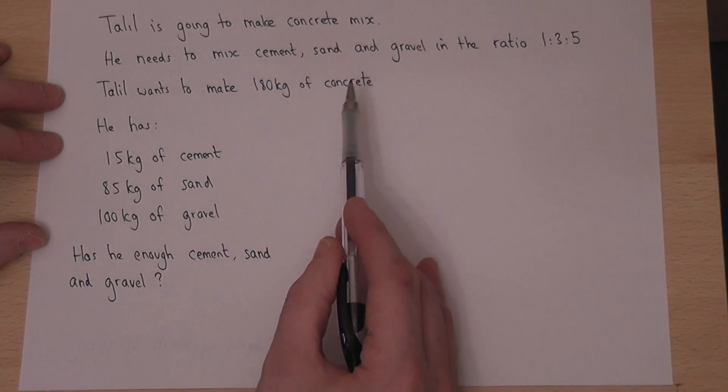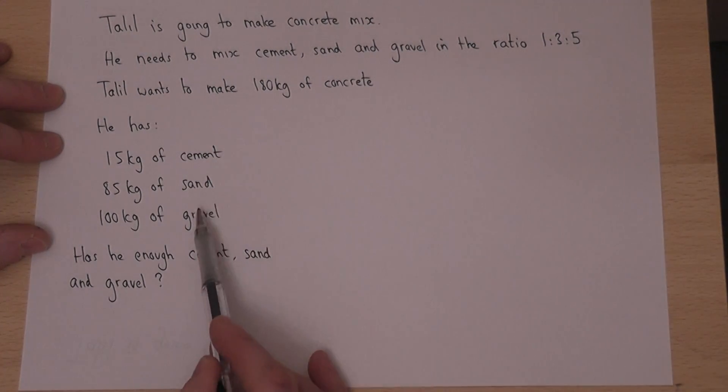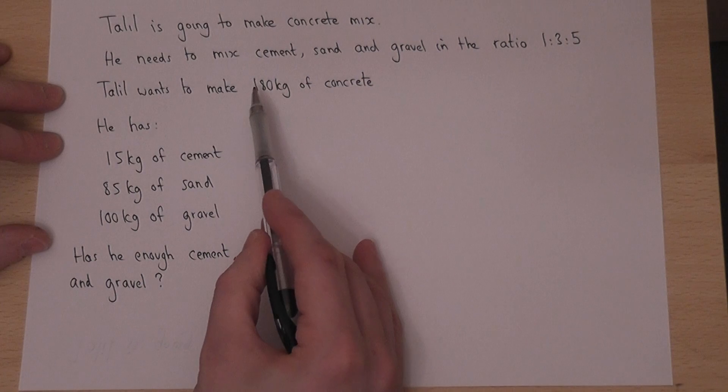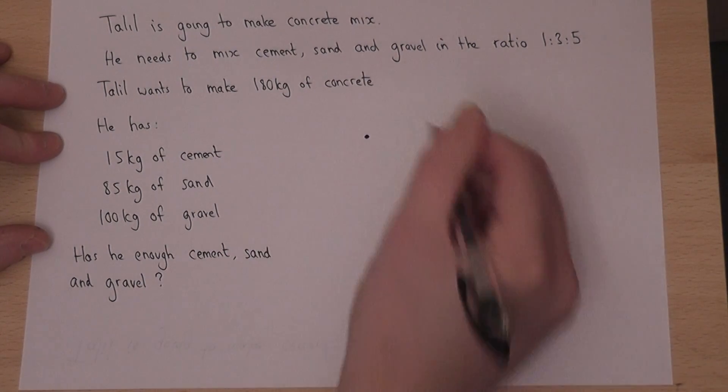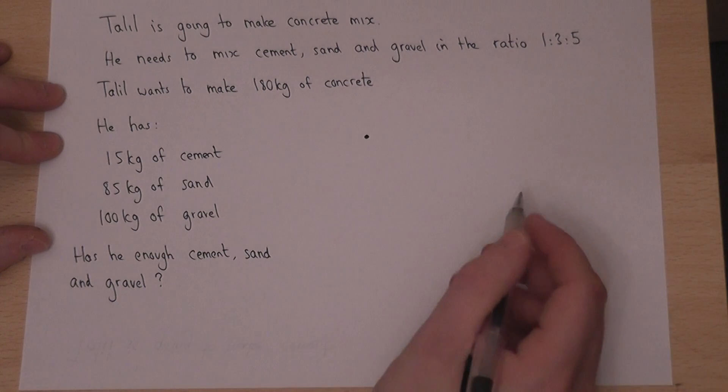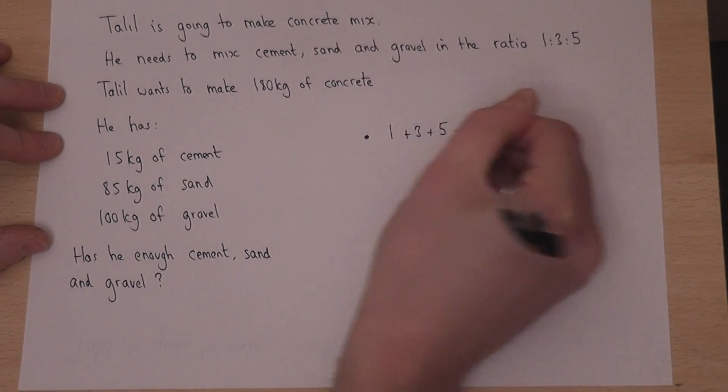Now, the best way to solve this is to work out how much of these he needs to make 180 kilograms of concrete. The method is quite simple. We go back to the ratio and do 1 plus 3 plus 5, which is 9.